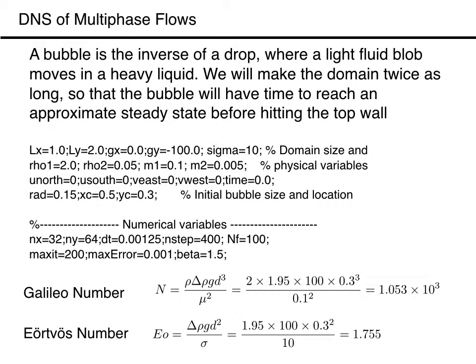Our code is, at least in principle, capable of solving a wide range of problems involving two immiscible fluids. It is, however, not written as a multipurpose code, so in most cases we need to change the code to do a new problem. The simplest change is to examine bubbles or light drops instead of heavy drops. To do so we only need to change the material properties so the buoyancy drives the bubbles upward instead of down. We change the density of the ambient fluid to 2 and the bubble density to 0.05. Similarly, the viscosity of the ambient fluid is 0.1 and the bubble viscosity is 0.05.